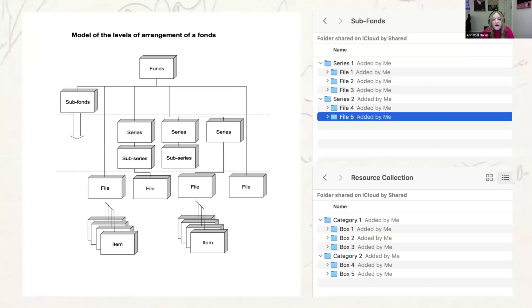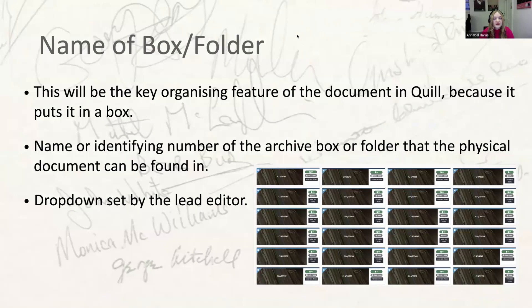The question of how exactly your files map onto the Quill metadata fields will be discussed between the team leads and the lead editor. You will need to draw an archive tree for the physical or digital archive you're working on, then work through how that maps onto your folders as saved and then onto the metadata categories in Quill. The first field is 'Name of Box/Folder', which assigns the document to a particular box — the key organizing principle within the resource collections in Quill. In the spreadsheet you'll enter this yourself, but in the Quill upload form you'll select it from a drop-down list.